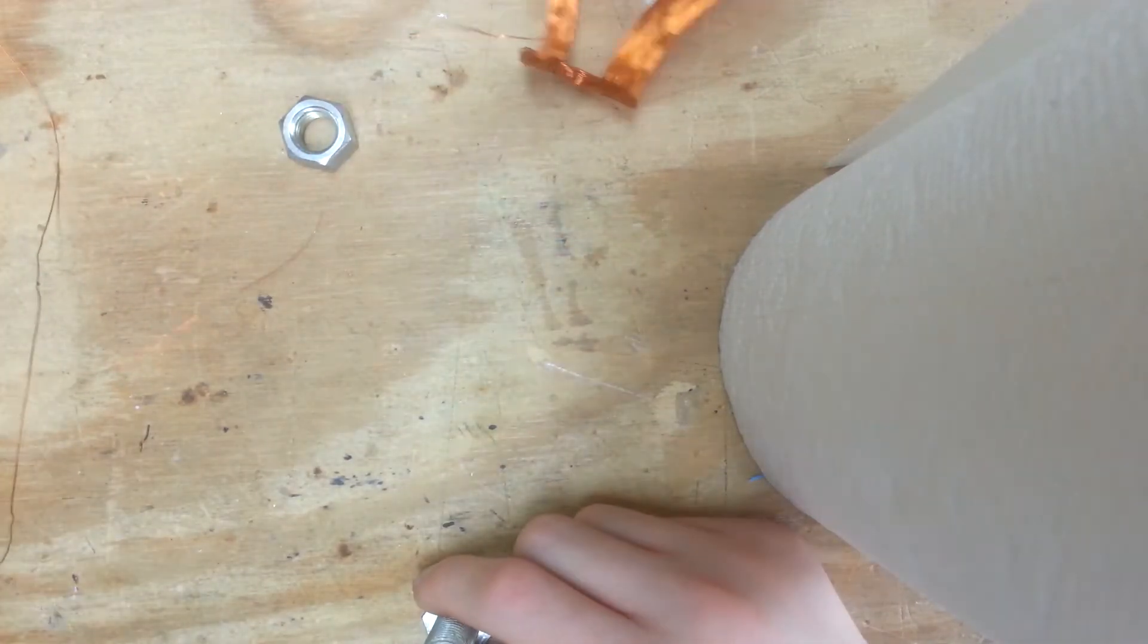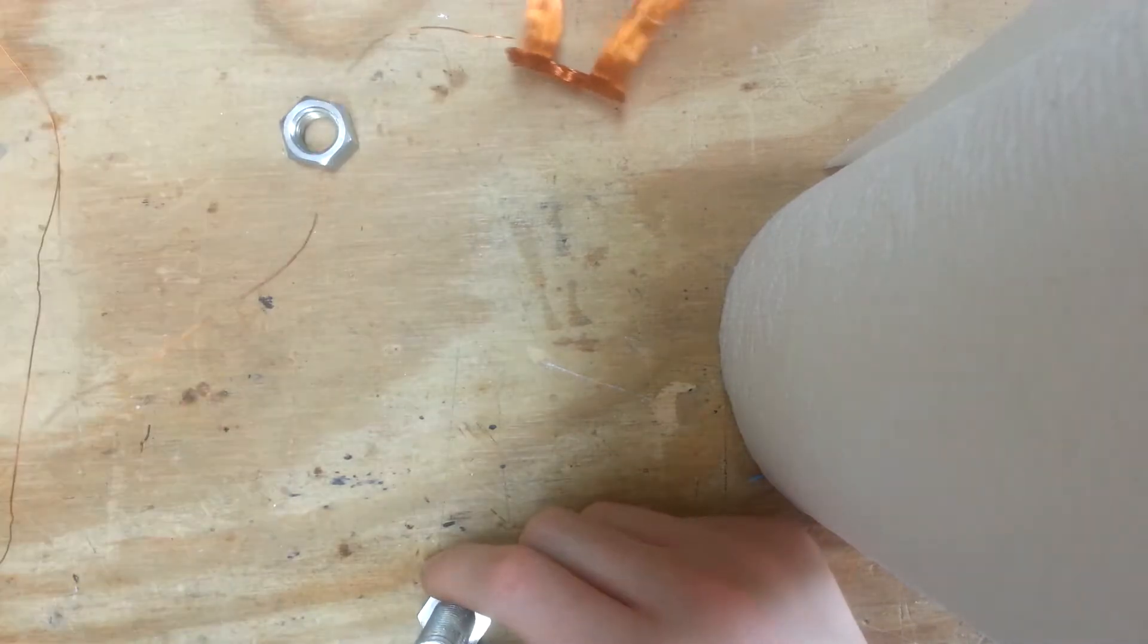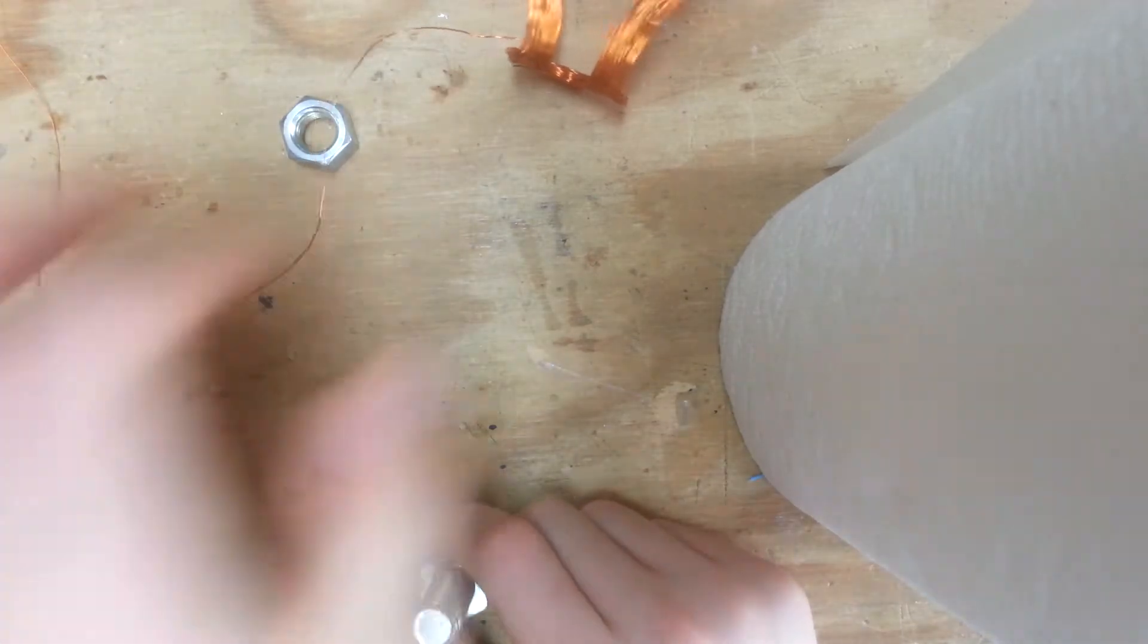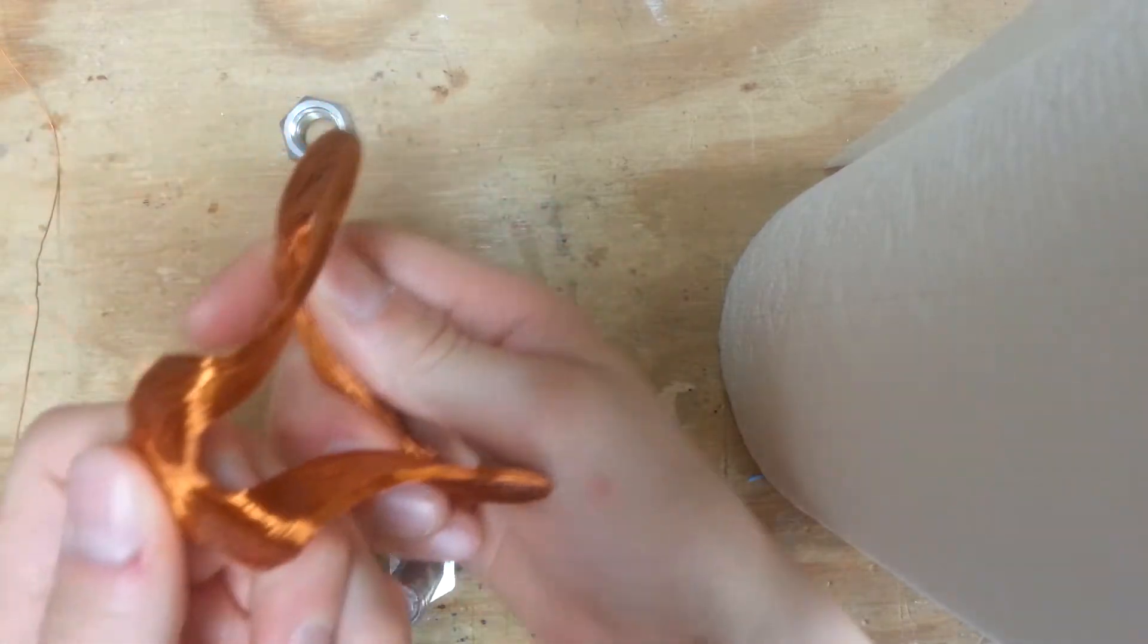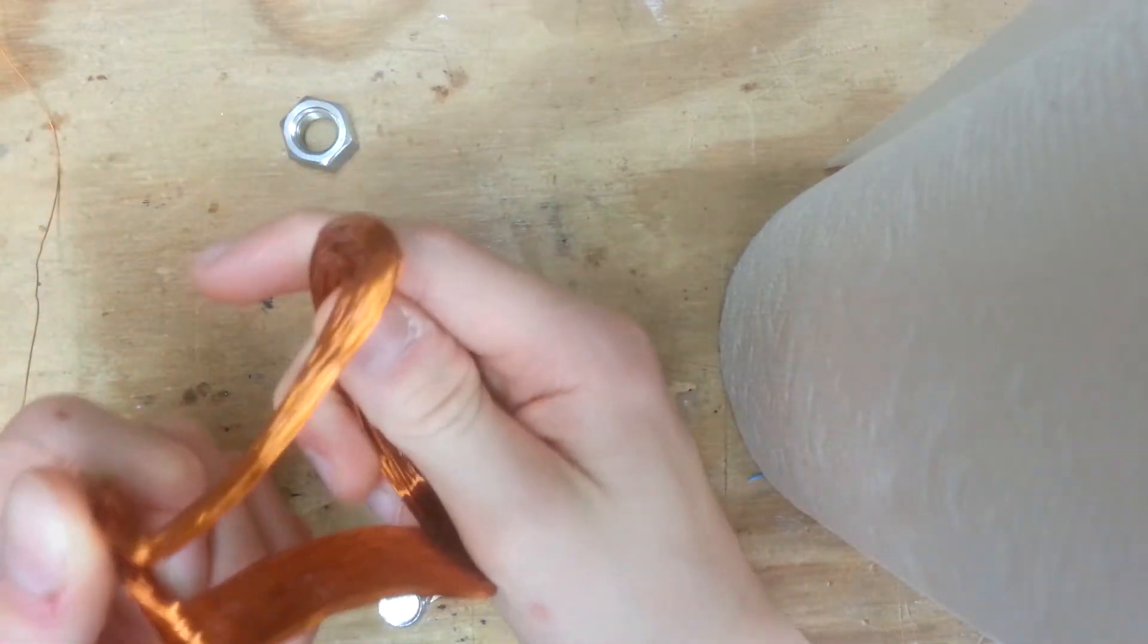Now I used about 10 feet on this one, so I'm not going to use quite as much. I already unwound some from this. You get this wire out of an old TV. It has a cathode ray tube.